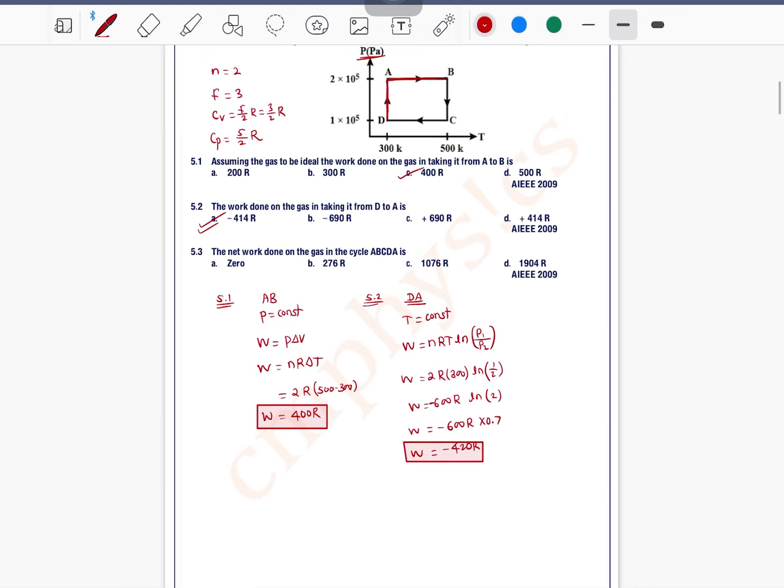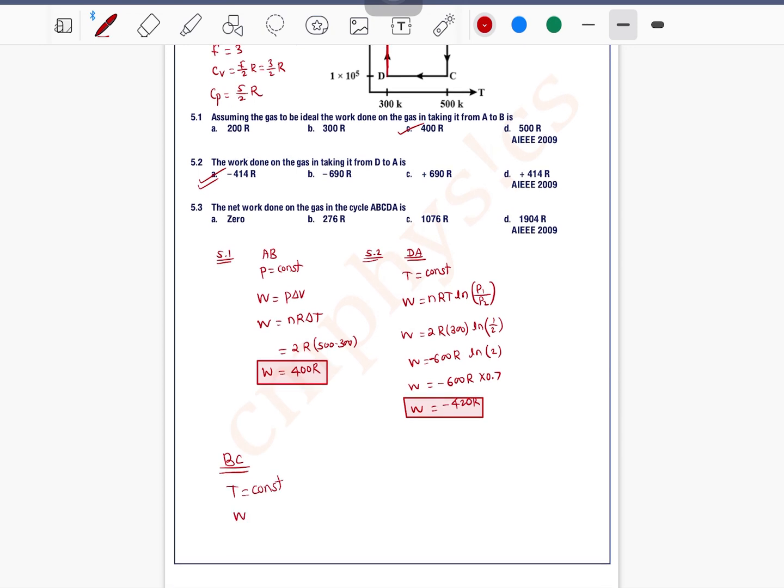So I will solve for BC process. See, BC process—what is constant in BC process? Temperature is constant. Temperature constant means again we can write it is an isothermal process having value nRT. N is 2, R is R, T